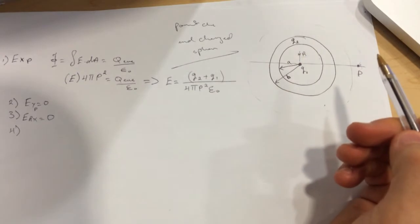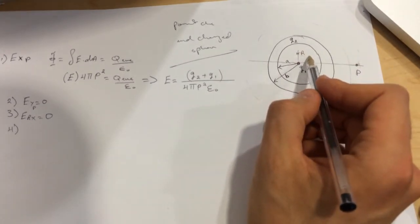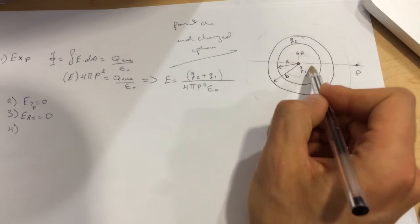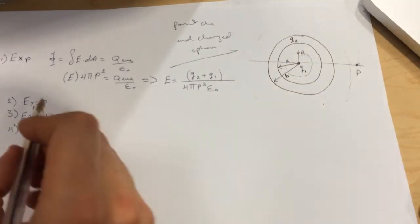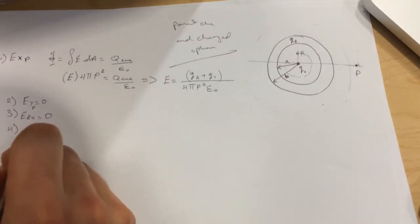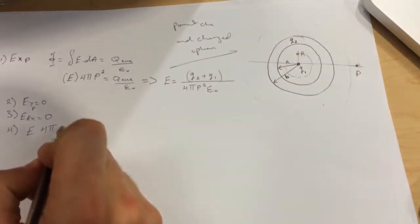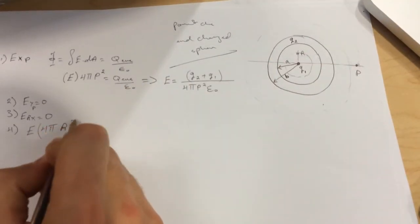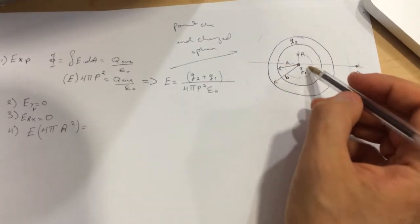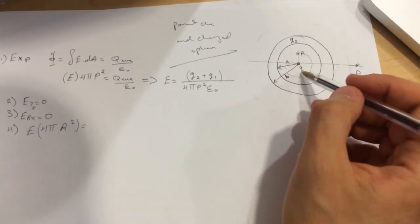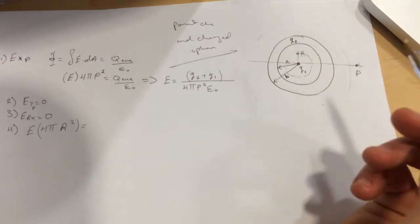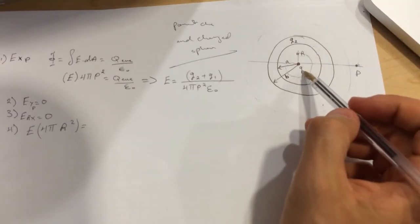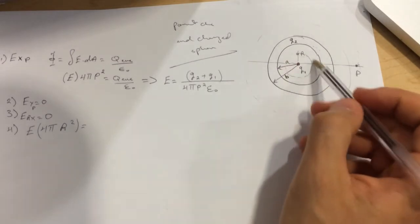Question number four is what is the value of the y-component of the electric field at point R. Let's draw our Gaussian surface. We'll be using E and then the Gaussian surface will be 4πr² equal Q enclosed.